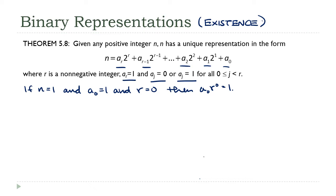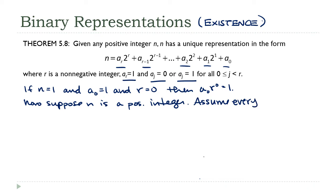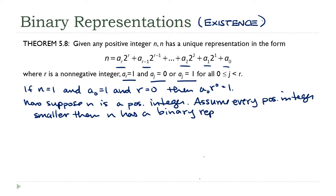For our induction step, suppose n is a positive integer. Our induction hypothesis will be that every number smaller than n has a binary representation — in other words, it can be written in that polynomial form. I'm going to avoid writing that big long expression over and over again. If I say a number has a binary representation, that means it can be written in that form.